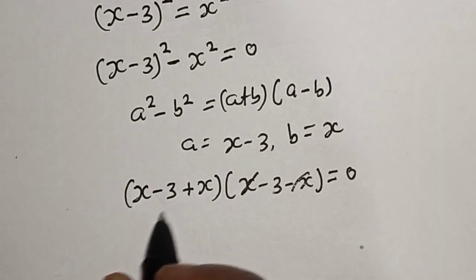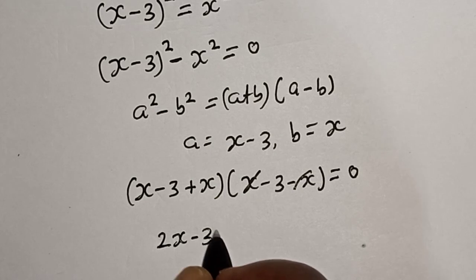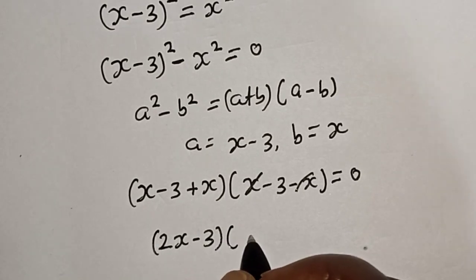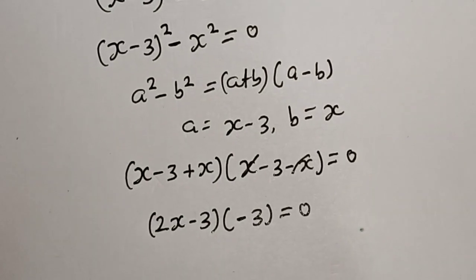This is 2x minus 3 multiplied by minus 3 is equal to 0. Then let's open this bracket.